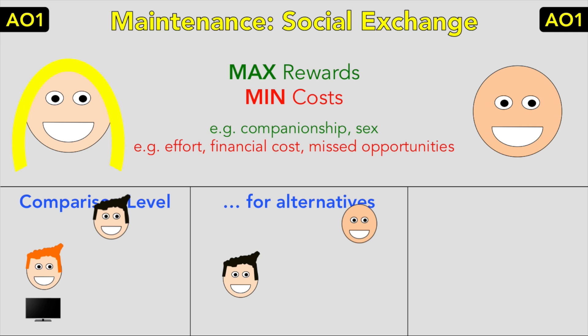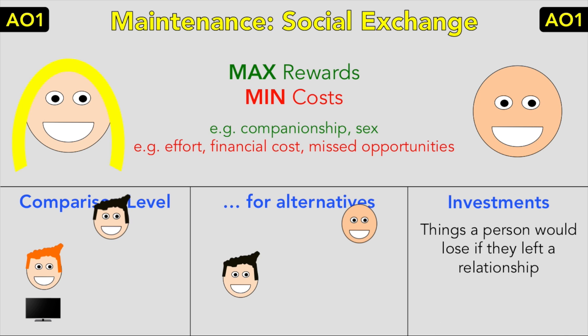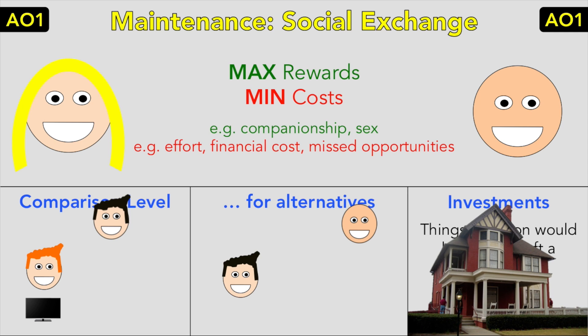The theory has since been extended by introducing investments — things a person would lose if they left a relationship, such as their home, mutual friends, children, etc. The theory predicts maintenance when either both partners are satisfied with rewards, there are no valuable alternatives, or the costs of leaving are high.